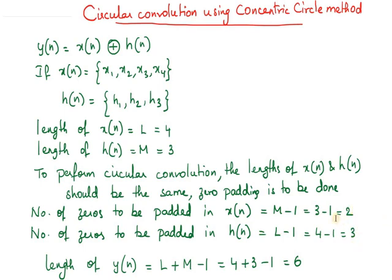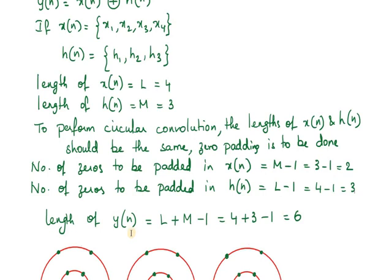The length of the output sequence y(n) is given by the formula L plus M minus 1. Here x(n) has 4 samples and h(n) has 3 samples, so 4 plus 3 minus 1 equals 6. Therefore in the output we have 6 samples.